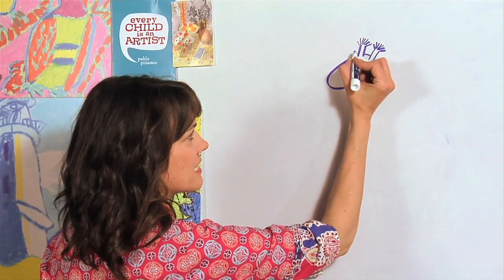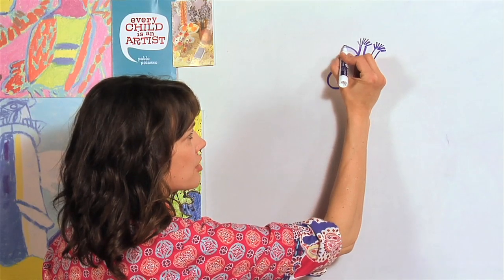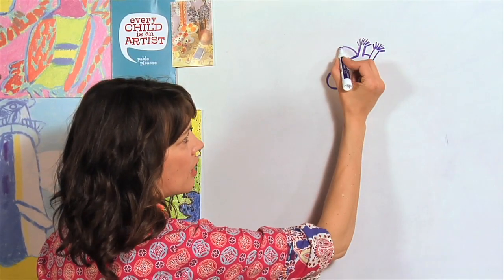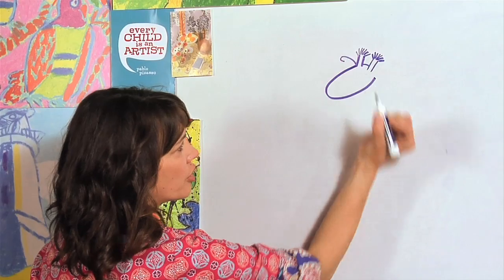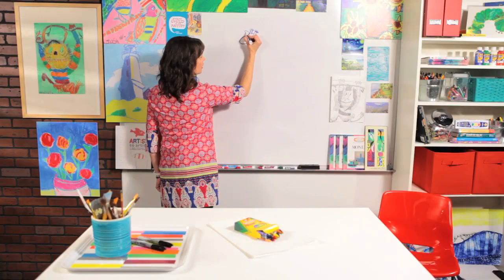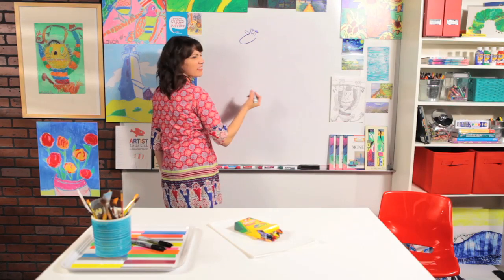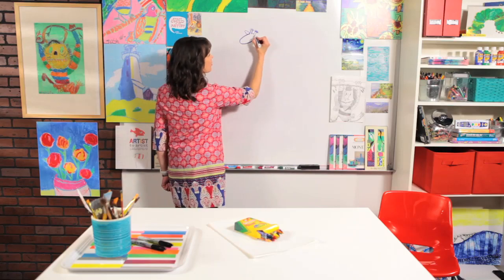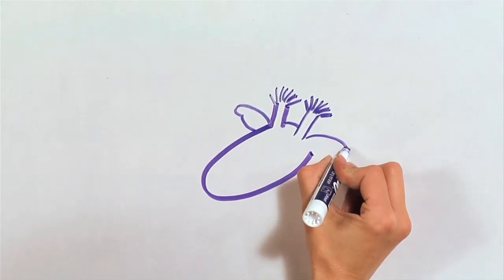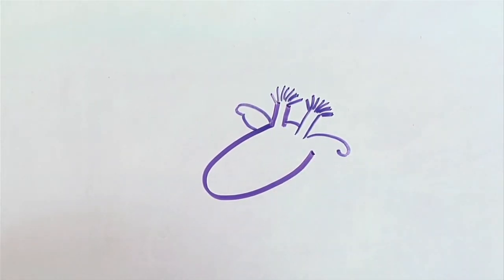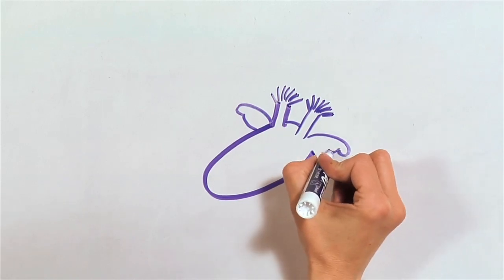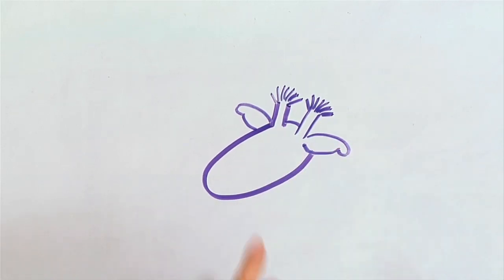Now giraffes also have ears. This ear we're going to put over here, this curve that way. I'm just going to do a little curve, and then a little bit of a bigger one. Let's try that one more time so you can see. I'm just going to go out with a curve, and just a little curve, and then a bigger one until I reach my head. Now if your head didn't reach there, you can just connect it at any time.